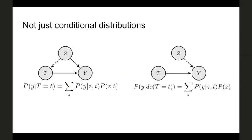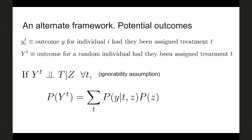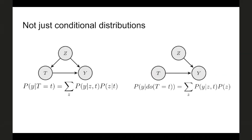To emphasise again: when we're talking about an intervention, it's not the same as a conditional distribution because the graph itself has changed. We're really talking about a distribution on a different graph, and therefore you can't use standard conditional probabilities without modelling the impact of that change. If we want the conditional distribution of Y given T, we compute P(Z|T) times P(Y|Z,T) summed over Z. But if the link between T and Z is no longer there after intervention, we have P(Z) rather than P(Z|T) — that's why there is a difference, because the graph itself has changed.